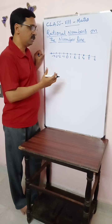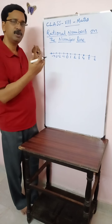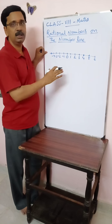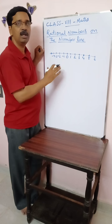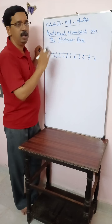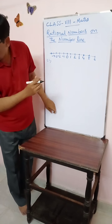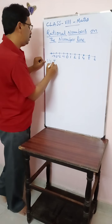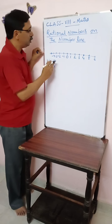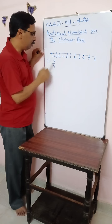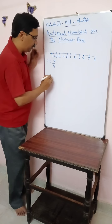Now, any rational number — any fraction — can be represented on the number line. We know that, but how to do that? Let us see through an example. We learn how to represent given rational numbers on the number line. First one: say seven by four. We represent seven by four on the number line. To represent seven by four, see the denominator — it is four.